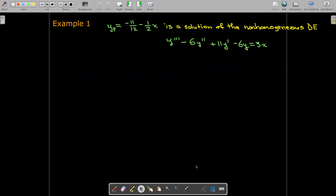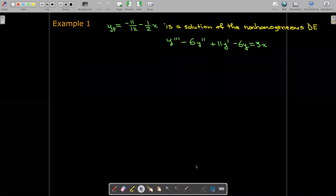And here's an example then. We're given a particular solution to this third-order differential equation. It's negative 11 twelfths minus one-half x.